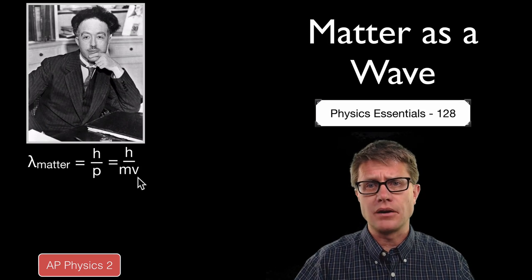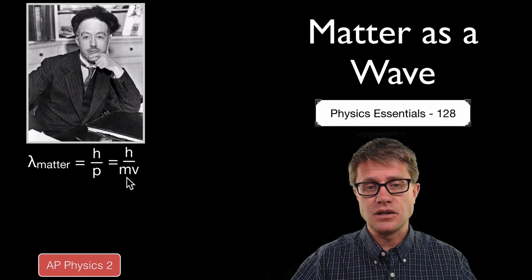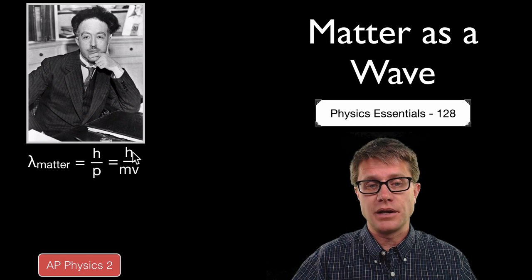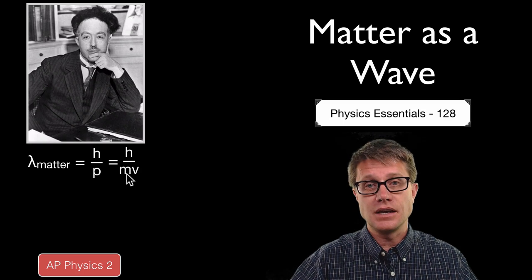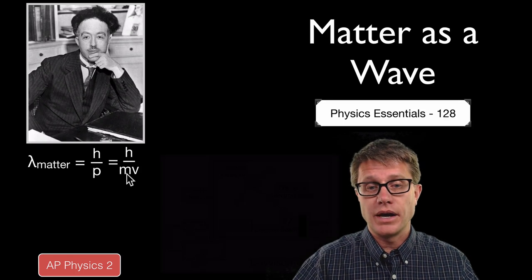The reason we do not see matter as a wave is that it has such a large mass compared to Planck's constant that the wavelength is so small that we do not really see it. But to show that it was a wave, a couple of scientists, Davison and Germer, devised a neat experiment.